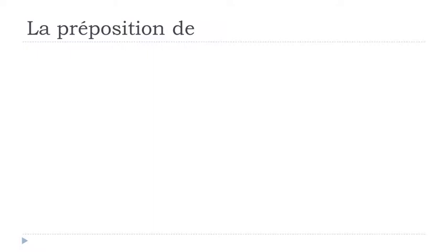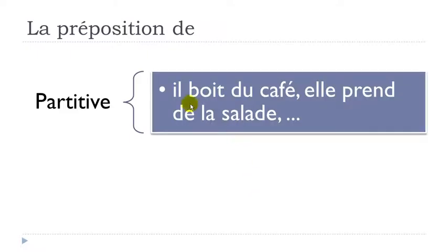Let's start now with la préposition de and see the different uses and meanings in English. The first use is the partitive — in French, le partitif. For example: il boit du café — boire means to drink — du café means coffee, and here the partitive form means 'some coffee.'